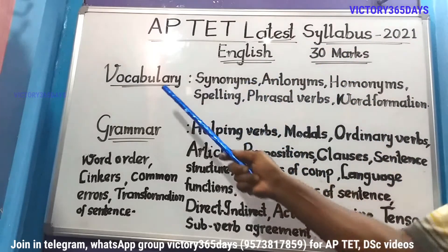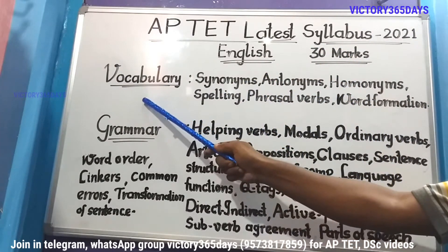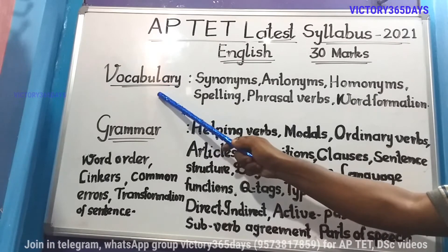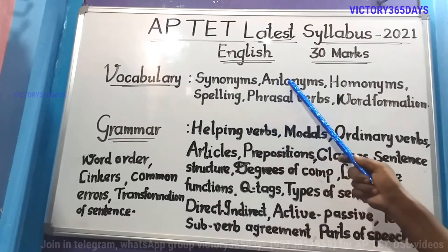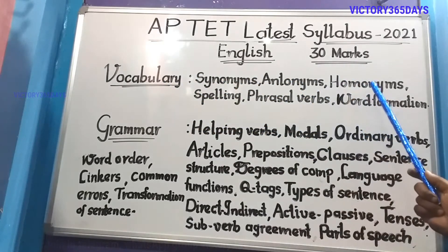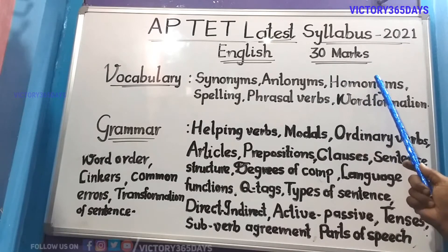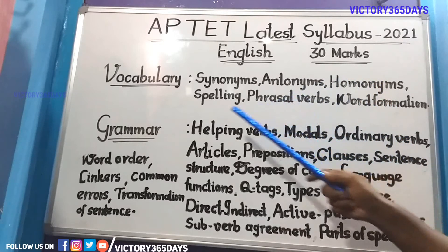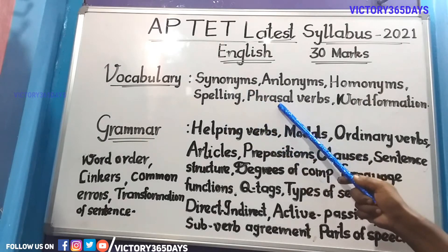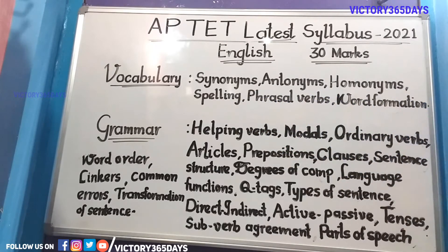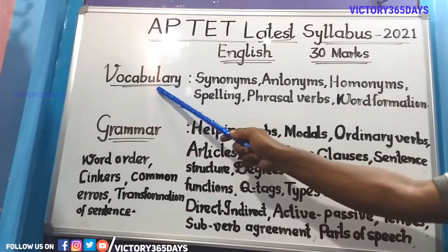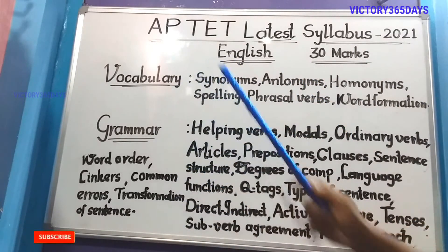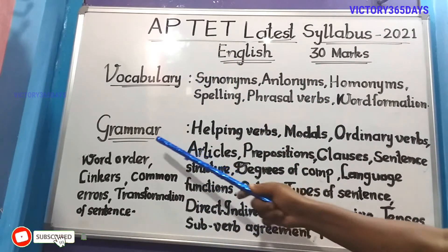First we'll see vocabulary. Vocabulary means word replacement. In vocabulary we have synonyms, antonyms, and homonyms — homonyms means spelling is different but pronunciation is the same. Next up: spelling, phrasal verbs, and word formation. This is what is covered in your vocabulary part.